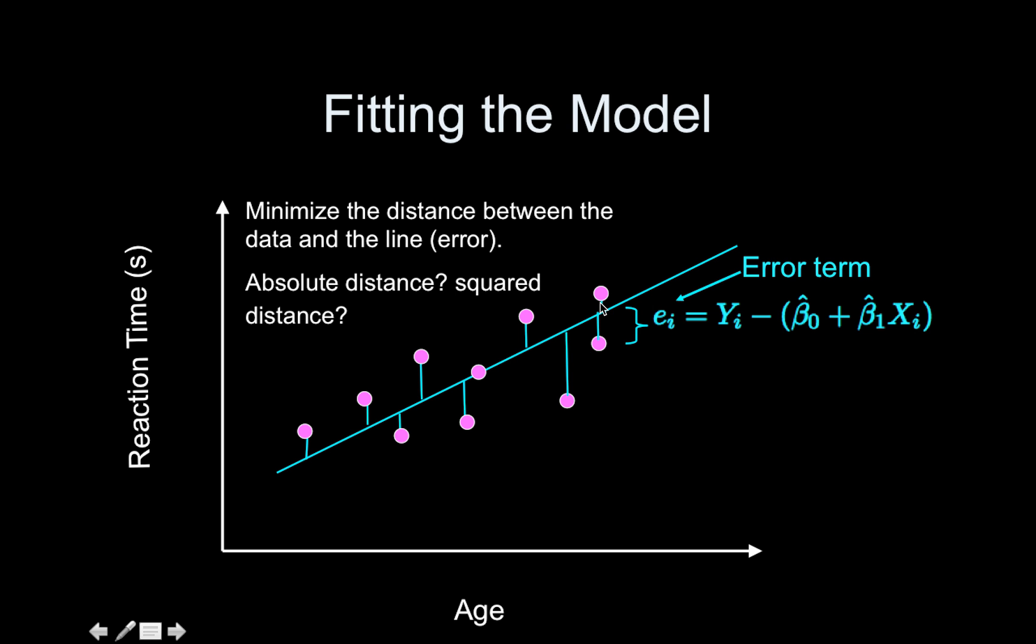So this distance dropping down straight from the line to the data point, I'm calling Ei, and that is our error term. So earlier I was using epsilon, that's something else, this is Ei. And all it is is the actual data value minus the estimated value for that age, in this case Xi.